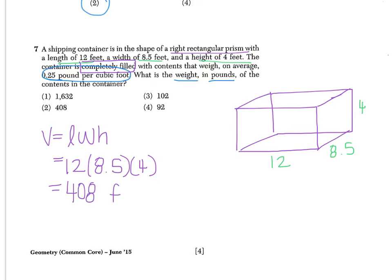And I know that each of these were feet, and because I multiplied feet times feet times feet, that's feet cubed. Now you can see that 408 is a choice here, but that's not our choice. We're asked about the weight in pounds. Right now I have cubic feet, so I need to change the cubic feet to pounds.